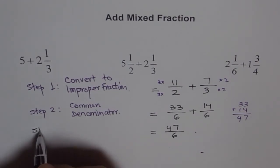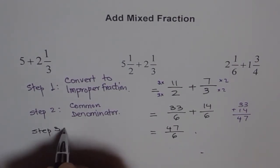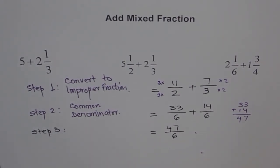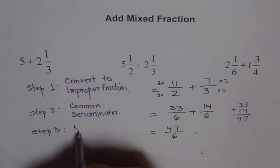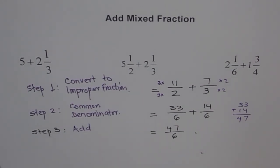So, step number 3 is add. Once you add, you get your answer as an improper fraction. If you get your answer as an improper fraction, it is good practice to write it as a mixed number. So, how do you write it as a mixed number? You need to divide 47 by 6.